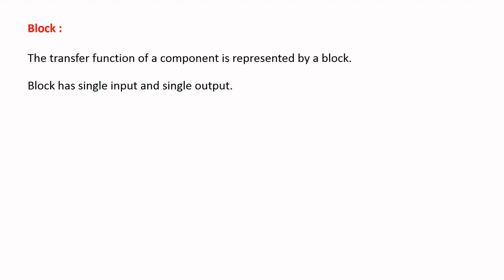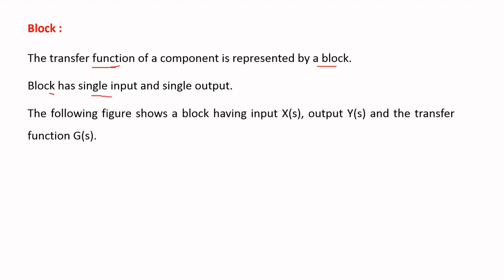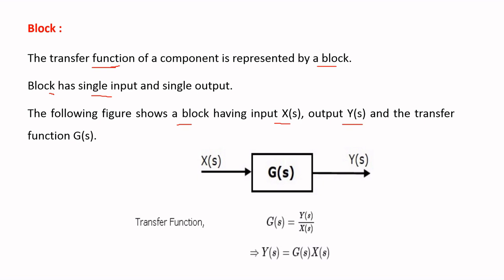Coming to the first element in the block diagram — the block: the transfer function of a component is represented by a block, and the block consists of a single input and single output. Considering a block with input X(s) and output Y(s), this simple block has G(s) as the transfer function, where X(s) is the input and Y(s) is the output.